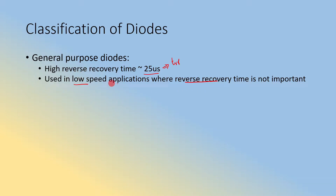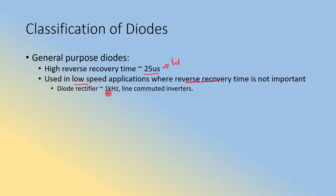General purpose diodes are generally used in low speed applications where reverse recovery time is not critical. They are used in diode rectifiers working around 1 kilohertz frequency and in line commutated inverters. We will cover line commutated inverters when we discuss the topic of inverters. This is just an overview of the general purpose diode.